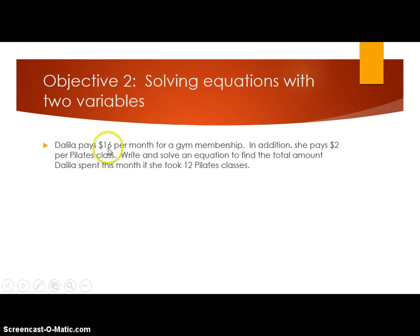Delilah pays $16 per month for a gym membership. In addition, she pays $2 per Pilates class. We're going to write and solve an equation to find the total amount Delilah spent this month if she took 12 Pilates classes. So the two variables are going to be cost and the Pilates classes. And this is per month. So we want to know just this month. And in one month, that's a fixed membership cost of $16. So that is fixed cost. That will be a constant. And the variable cost depends on how many Pilates classes she takes.